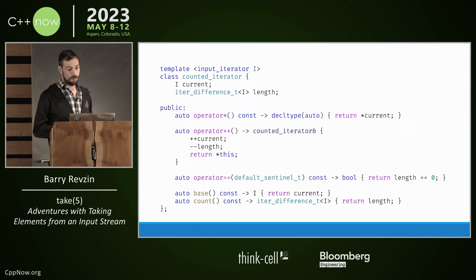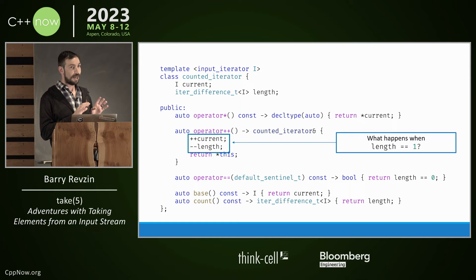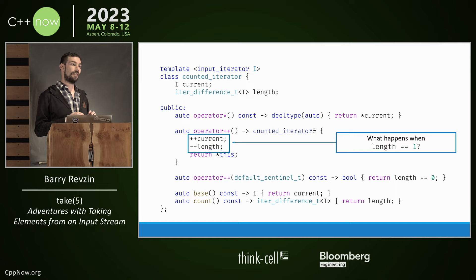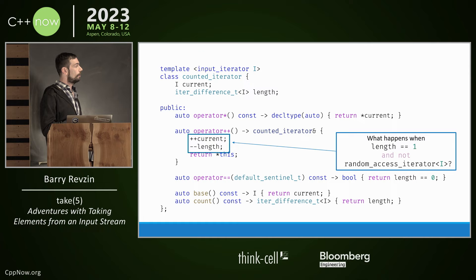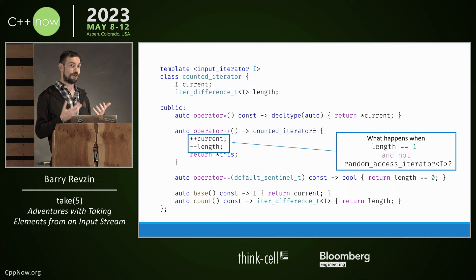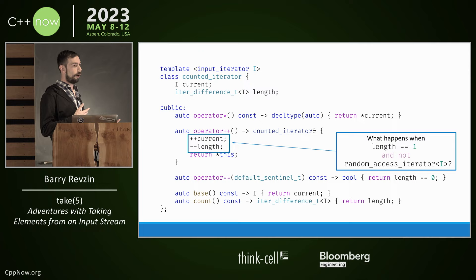Let's go through what went wrong. In counted_iterator, the problematic box when length equals one is that last underlying iterator increment. For random access iterators, that increment is cheap — a constant time operation — so let's exclude that case. But for input iterators, incrementing is consuming information. That extra increment destroys info we have no other way of acquiring. Even for bidirectional iterators, if the iterator is a filter, that last increment could be a linear-time operation we don't want for performance reasons. There are multiple reasons to want to avoid that extra increment.